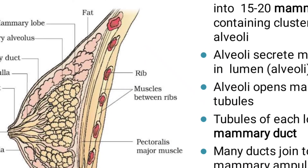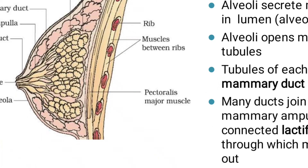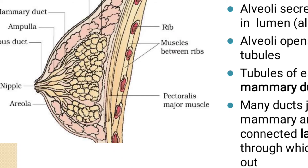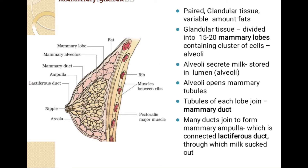When we look at the back part, it is connected with the rib muscle. Between ribs, the pectoral major muscles are present. From the upper part, the nipple is present which consists of many mammary lobes.